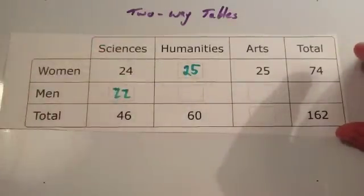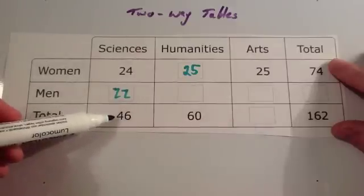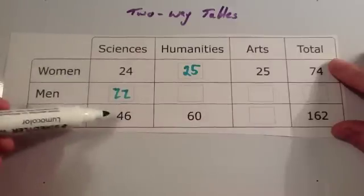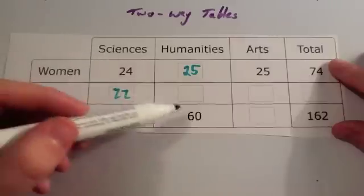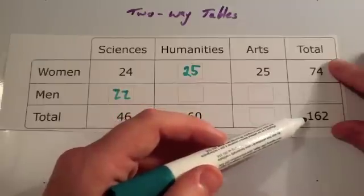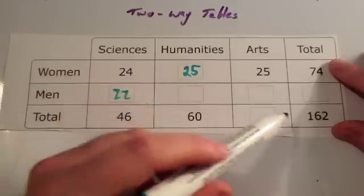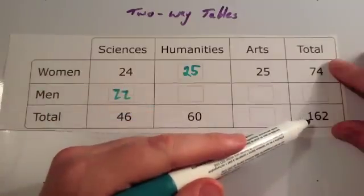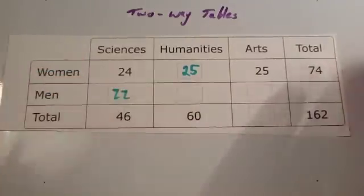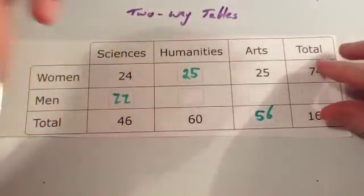Now let's work out how many people study arts altogether. There are 46 altogether doing science and 60 altogether doing humanities. We know the total is 162. If you add those two together you get 106. If you take 106 away from 162, you'll find out how many people do art. 162 take away 106 gives you 56 people doing art altogether.